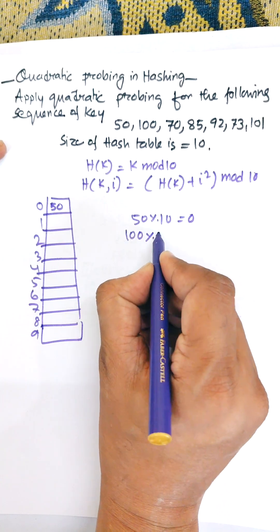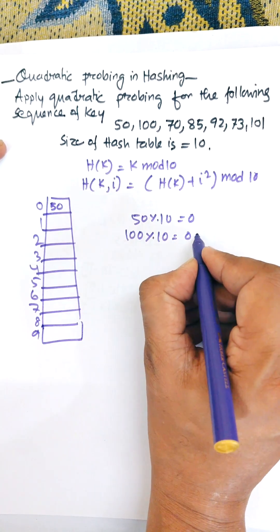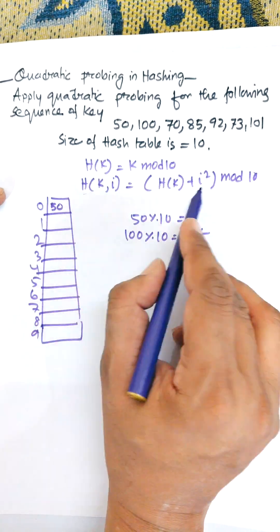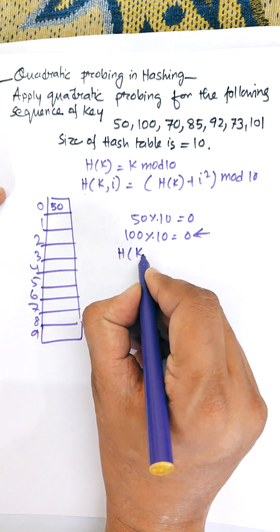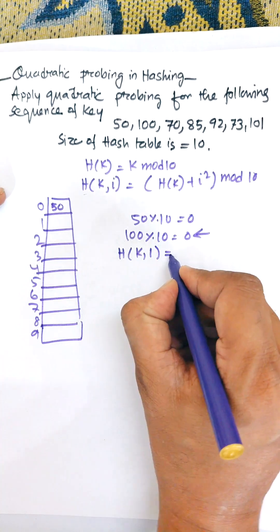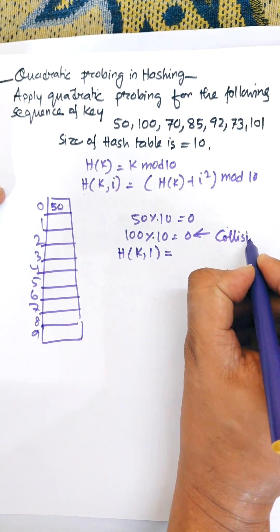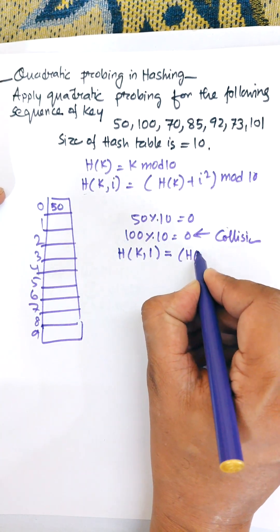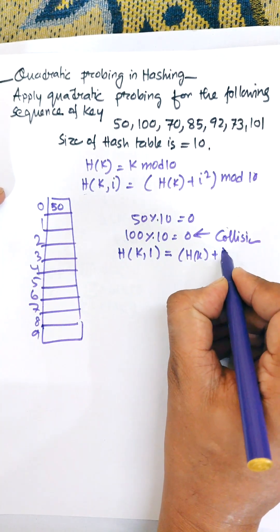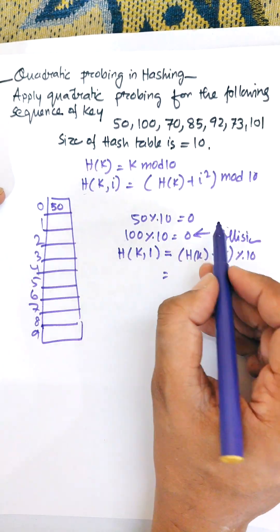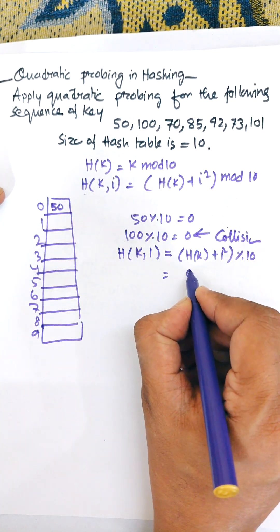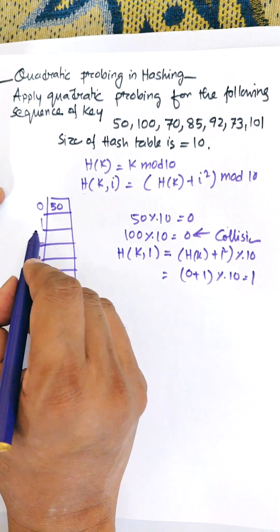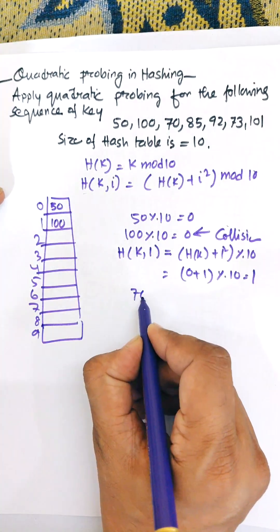Now applying 100 mod 10, which equals 0. Location 0 is already occupied by 50, so there is a collision. We apply h(k, 1) = h(k) + 1² mod 10 = 0 + 1 mod 10 = 1. So 100 will be allocated at location 1.